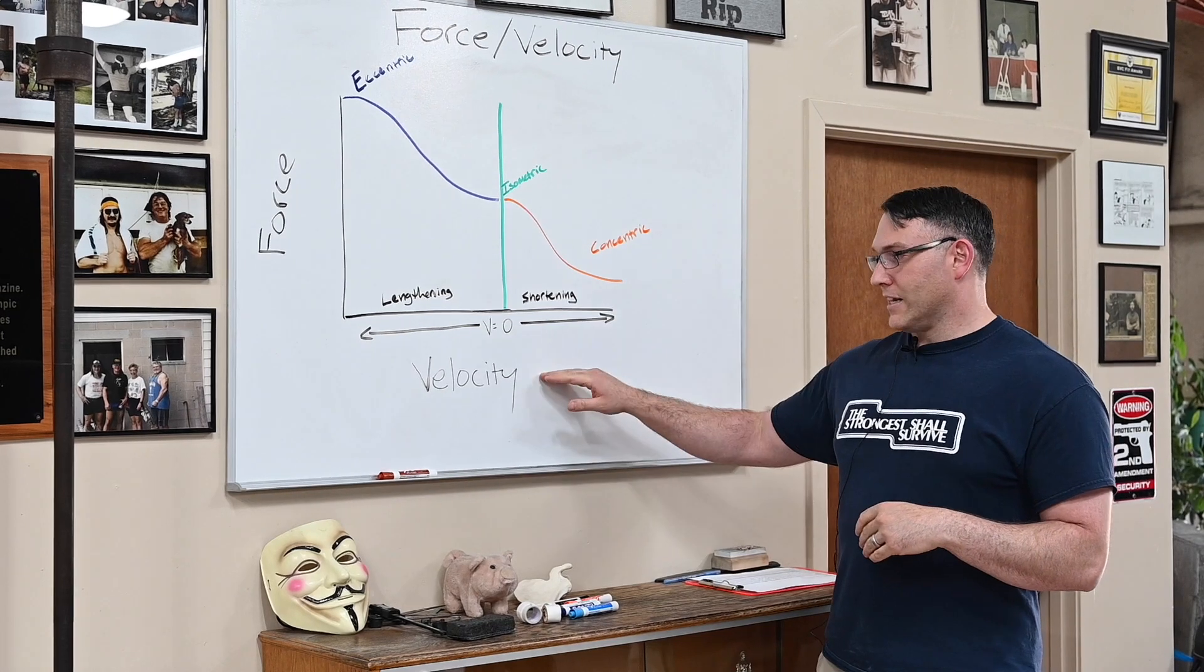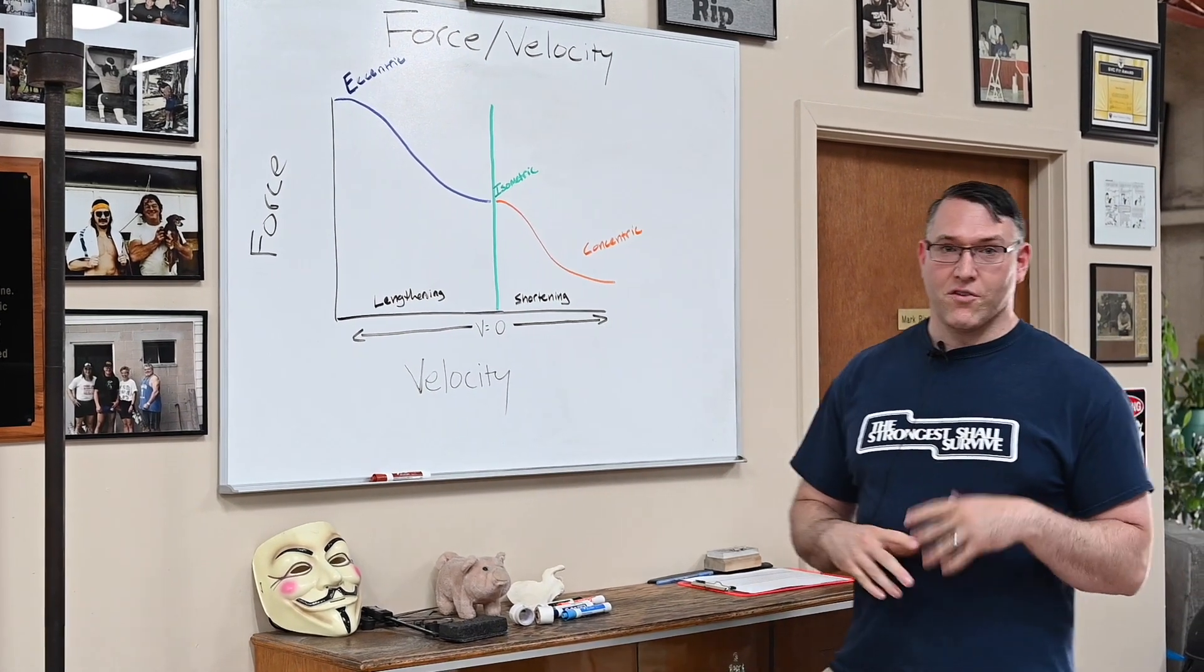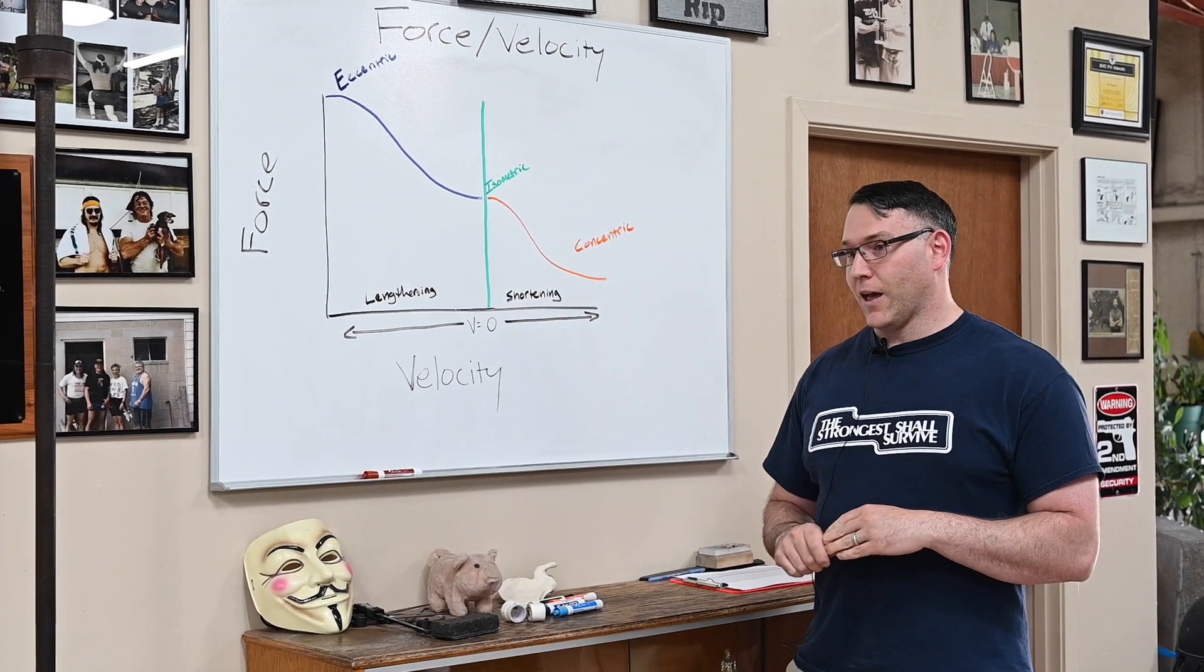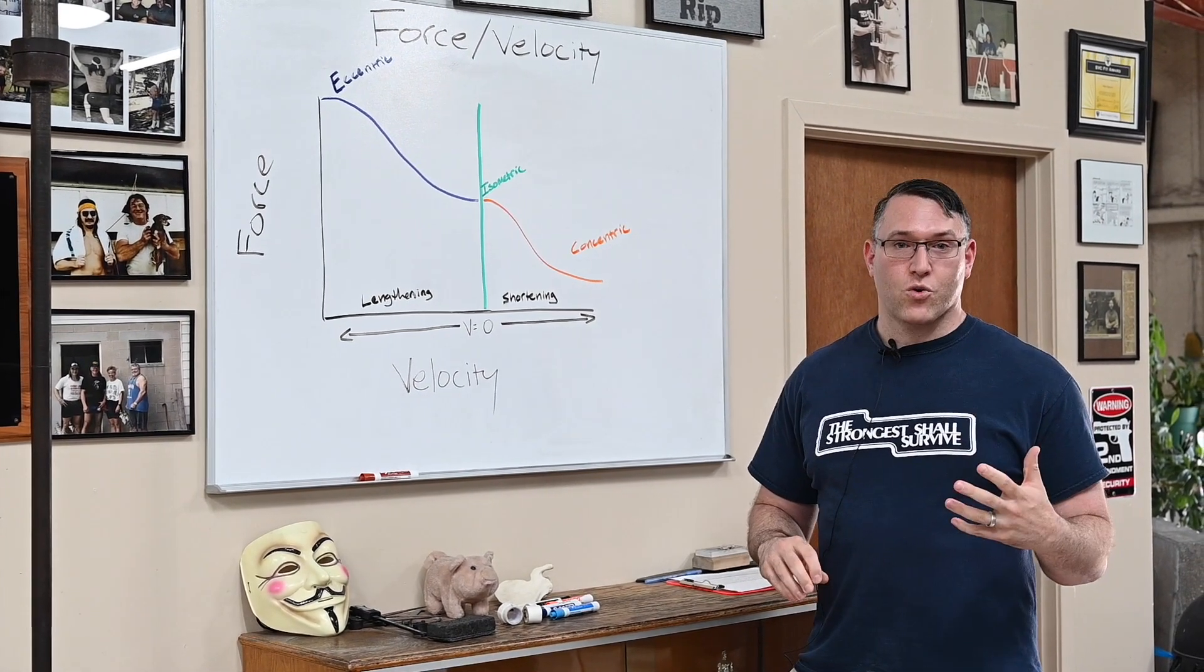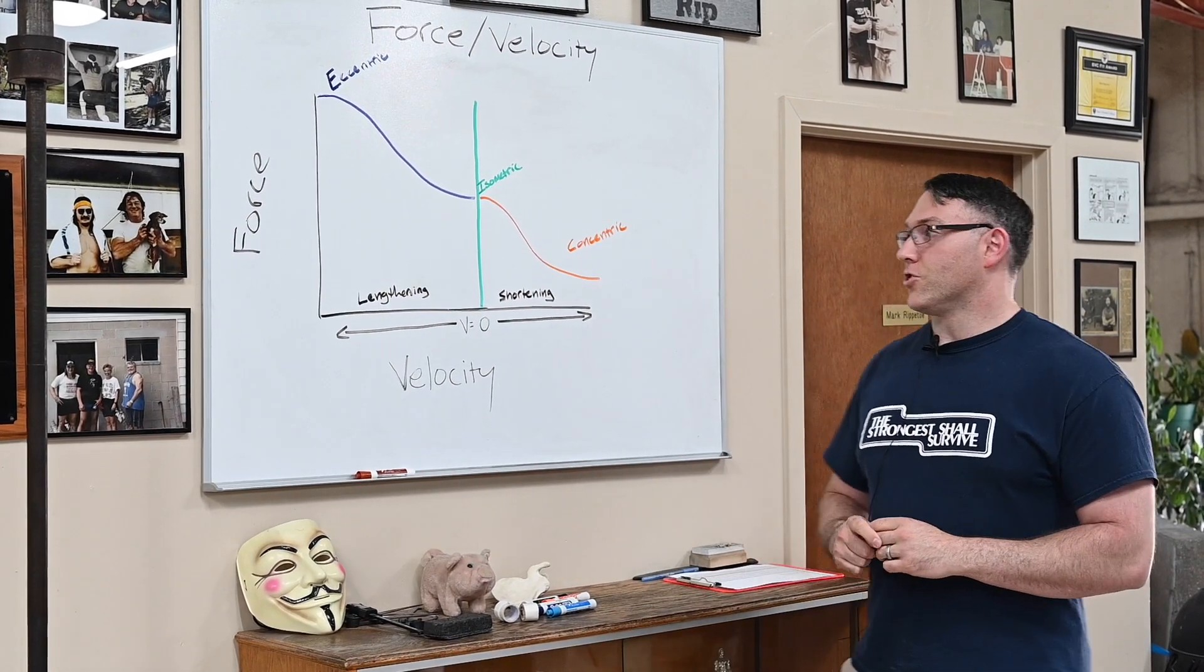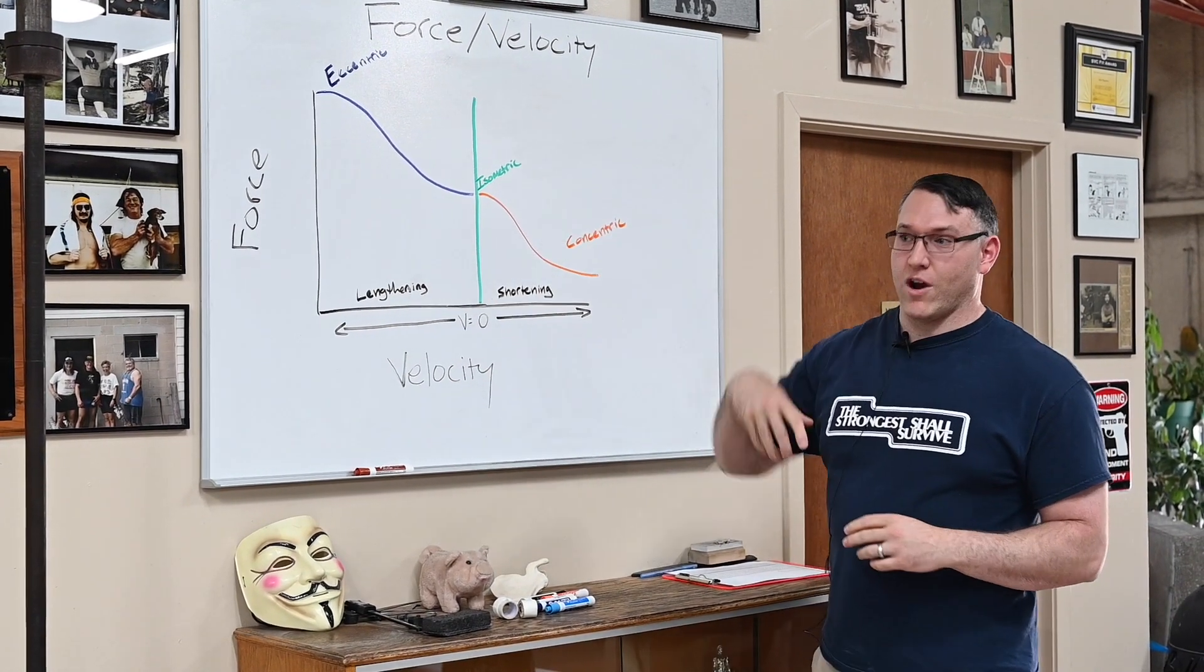Velocity is also a vector. Velocity, very simply stated, is the vector quantity for speed. So it's speed in a particular direction. How does this relate to muscle contraction?